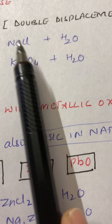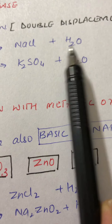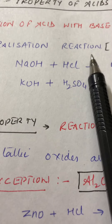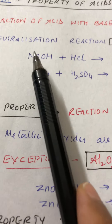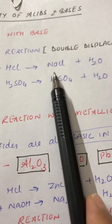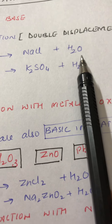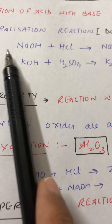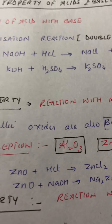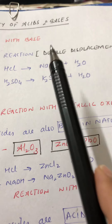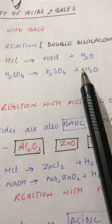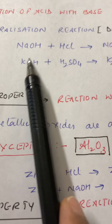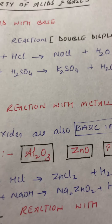The product is NaCl plus H₂O — salt and water. A neutralization reaction is defined as the reaction between an acid and a base to form salt and water only, with no evolution of gas. It is one of the fastest reactions in chemistry and is also an example of a non-precipitation double displacement reaction, because there is exchange of ions but no formation of precipitate.